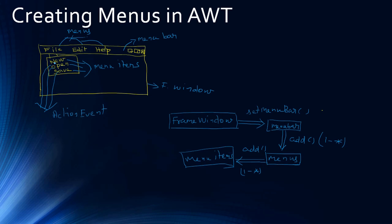Menu items as well as menus will produce action events. You may think why we need an action event for a menu — because when you click Edit, if you want to enable or disable certain menu items you can handle that in the action event of menus. Once you click a menu item it produces an action event and you can take an action. For example, when the user clicks Save, in the action event you check for that particular menu item and then perform the save operation.